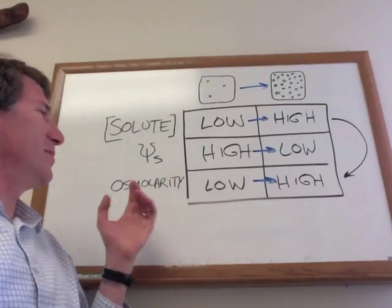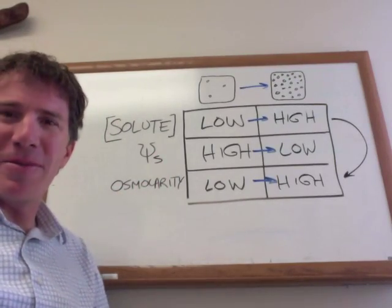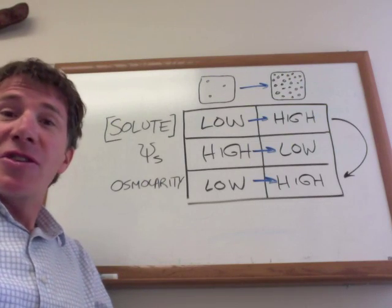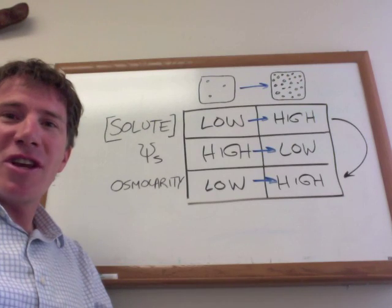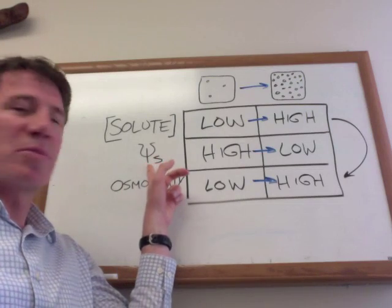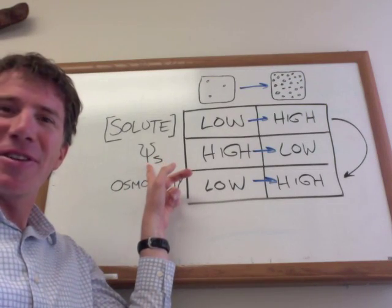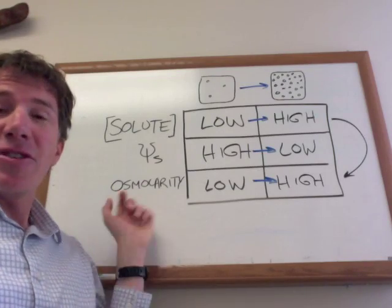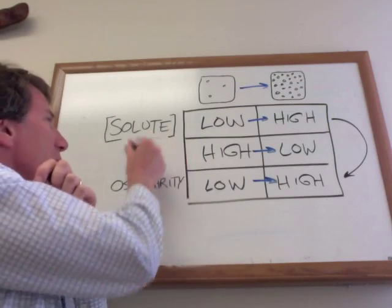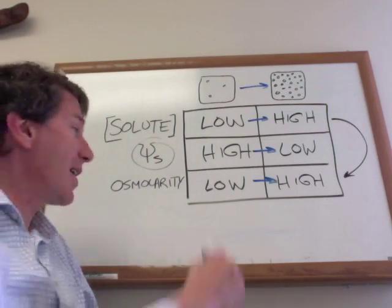You might be thinking to yourself at this point, why have these two different terms? What's the value of that? Honestly, part of it has to do with the history of plant biology and animal biology, where plant biologists have tended to use water potential and solute potential to describe these things, and animal biologists have tended to use osmolarity. But there's a more important reason why we want to use solute potential when talking about plants.